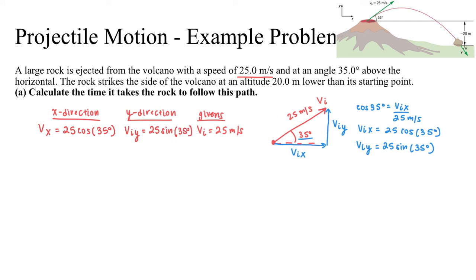I'm also given that the rock strikes the side of the volcano at an altitude 20 meters lower. And so if I look at this up here, I'm actually given the displacement is negative 20 meters. So delta y is negative 20 meters. It's really important to keep in mind that this is negative because we've defined in our problem statement that up and right are positive directions.